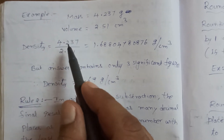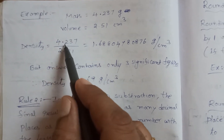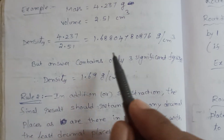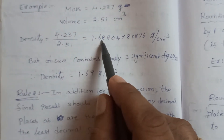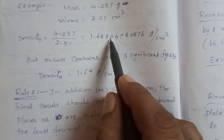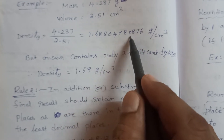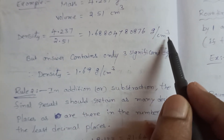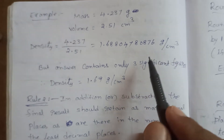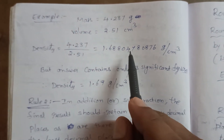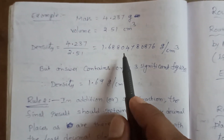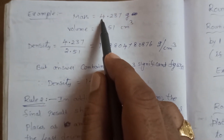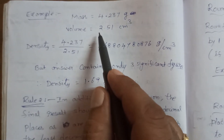The density formula is mass divided by volume, that is 4.237 ÷ 2.51, which equals 1.68804780876 grams per cubic centimeter. That is the raw answer, but we need to apply the significant figures rule. The significant figures of mass (4.237) is 4.